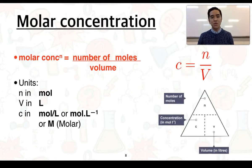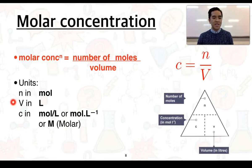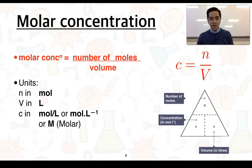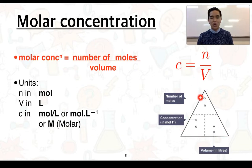Molar concentration is essentially the number of moles of a solute in a given volume of solvent. The number of moles N is given in mol, volume in litres, and molar concentration uses the symbol C with units of moles per litre, which can also be expressed using the capital M, pronounced 'molar'. The formula is C equals N over V, and we can rearrange it or use the triangle to solve for any of the three variables given the other two.